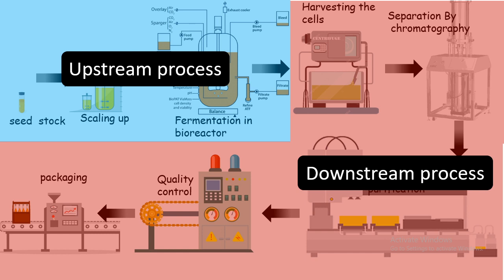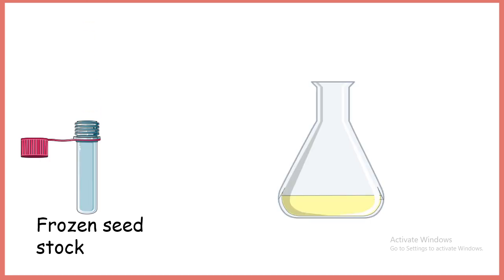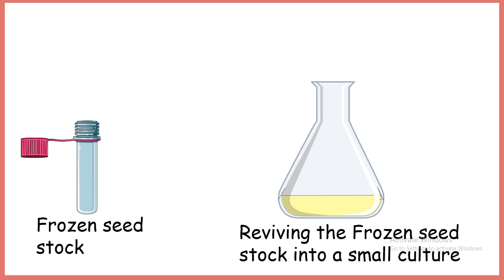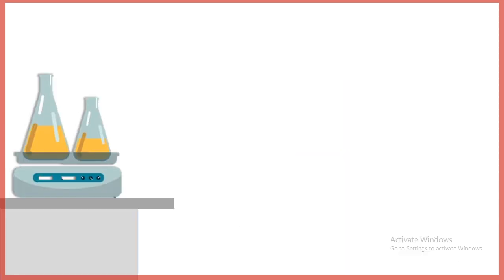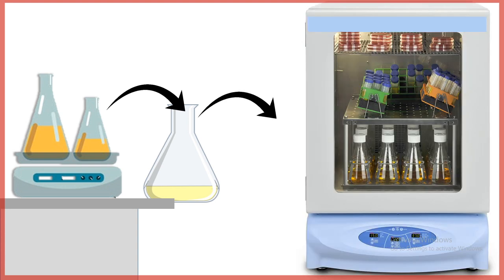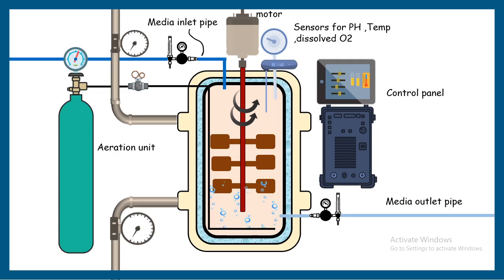Starting from a frozen seed stock, the culture is placed in a relatively bigger vessel and revived. After that, the volume is gradually amplified — scaled up step by step — until the volume is large enough to be transferred into the main bioreactor tank.